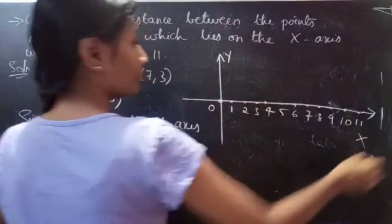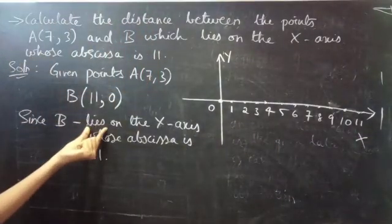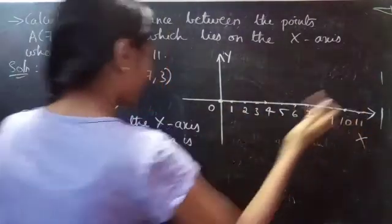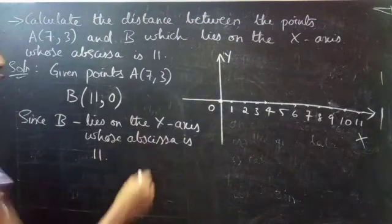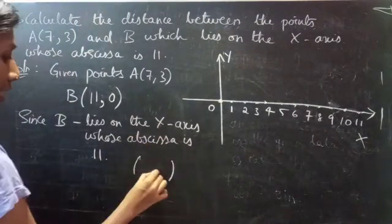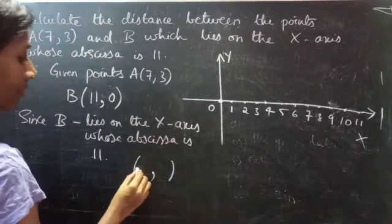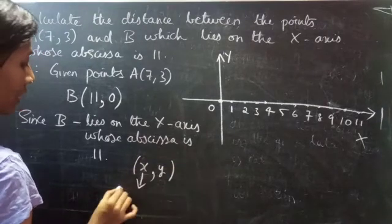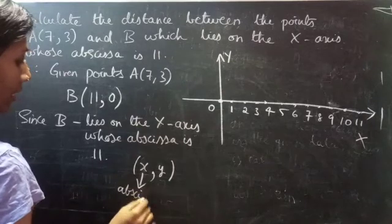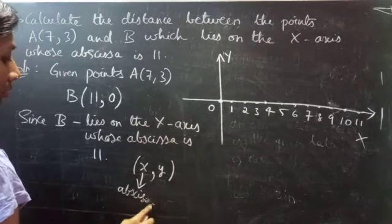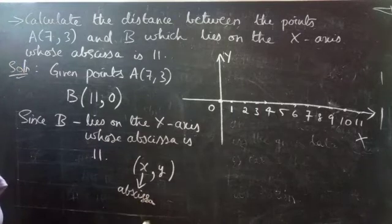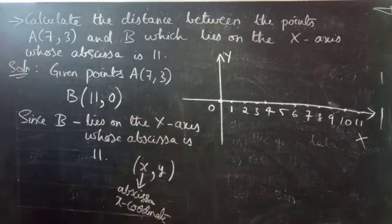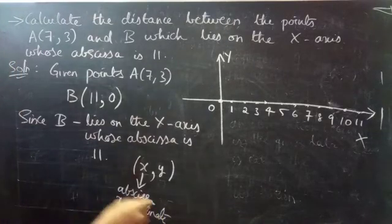So what we are given is that B lies on the x-axis. If you consider an ordered pair or coordinate, you will have one number x and y. The first number is for x-axis, we call it as abscissa.